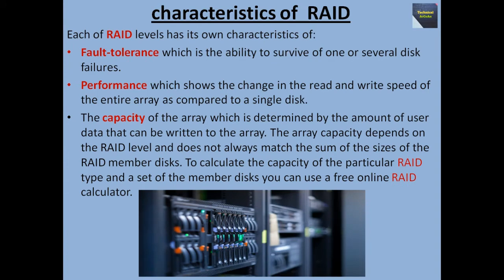Now we talk about characteristics of RAID. Each RAID level has its own characteristics. First, fault tolerance — the ability to survive one or several disk failures. Next, performance — which shows the change in read and write speed of the entire array compared to a single disk. And the capacity of the array, which is determined by the amount of user data that can be written to it. The array capacity depends on the RAID level and does not always match the sum of the sizes of the RAID member disks. To calculate the capacity of a particular RAID type, you can use a free online RAID calculator.